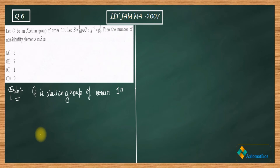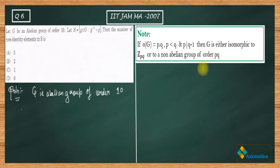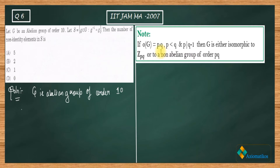Let me show you those notes. The note says: if the order of the group is p·q, where p is less than q and p divides q minus one, then the group is either isomorphic to Z_pq or to a non-abelian group of order pq. Here p and q are prime numbers.